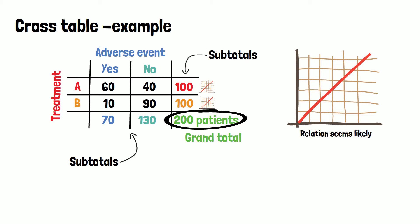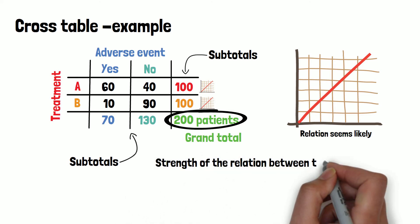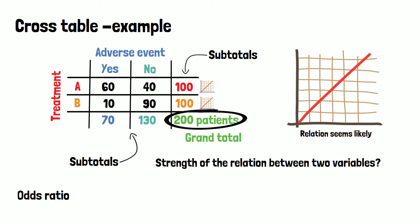Now that we have an idea of the data, how can we use this information for the statistical analysis? The strength of the relation that we suspected between the two variables can be measured by the odds ratio.